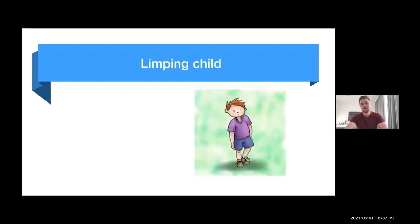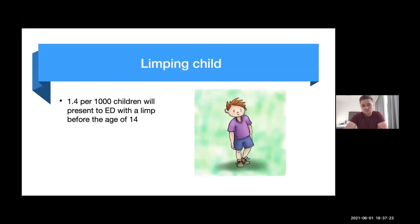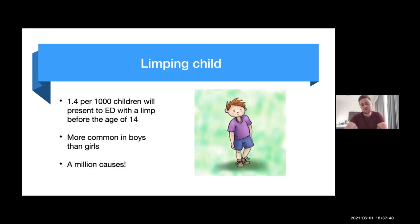We're going to start by talking about the limping child. 1.4 in 1,000 children will present to the A&E department with a limp before they're 14, which is actually quite a high number. This can be a painless or painful limp, and it's more common in boys. The reason it's important to have an approach is that there are benign causes you don't need to worry about, but some are serious and require urgent or emergent surgery.